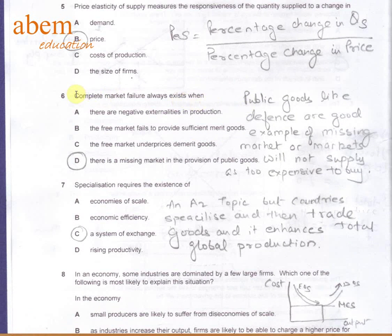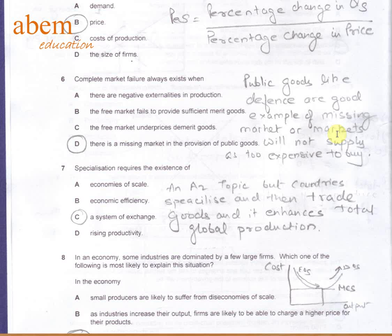Question number six: you're looking for complete market failure, which is normally for pure public goods like defense, where the markets are missing as the markets will not be able to supply as it is too expensive to buy. So there is a missing market in the provision of public goods.